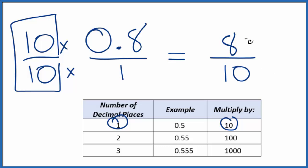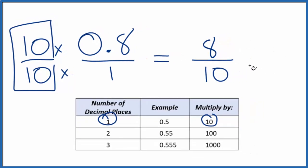But now with this, what we can do is 2 goes into 8 4 times. 2 goes into 10 5 times. We can simplify this.